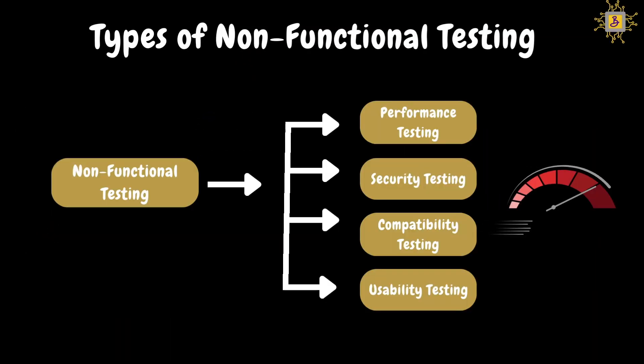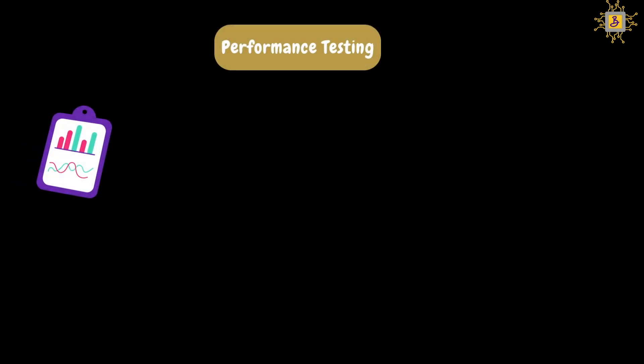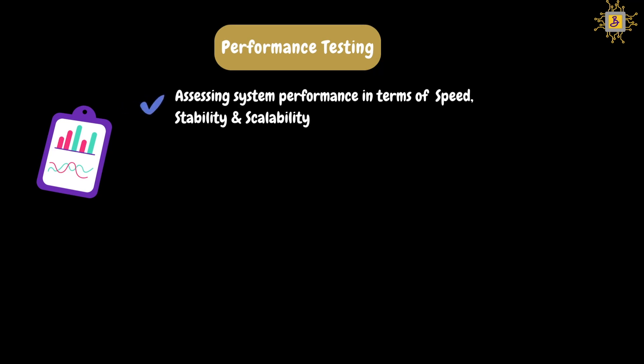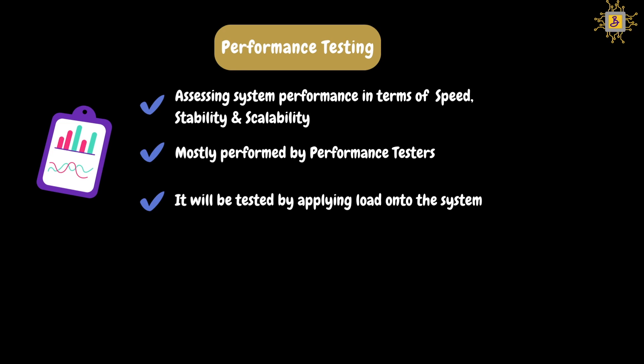Let's look at different types of non-functional testing. There are four types: performance testing, security testing, compatibility testing, and usability testing. Let's start with performance testing. This testing will assess the system performance in terms of speed, stability, and scalability — how fast we get a response from the application, whether we see stability issues, and whether the application is scalable for future growth. This testing will be performed by performance testers or engineers. Performance testing will be conducted by applying load onto the system, and performance will be captured at different load levels. Here, load means number of concurrent users or transaction volume. With the help of performance testing, we can identify any performance bottlenecks or issues in the system.